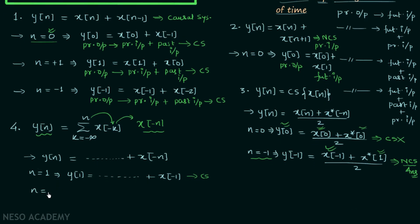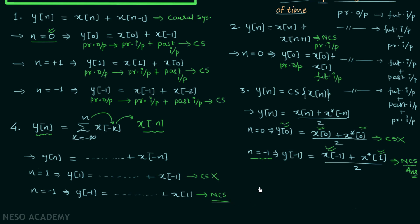However, checking n = -1 gives y[-1] as a sum of terms with final term x[+1]. The present output is now depending on a future value of input. Therefore the system y[n] = Σ(k = -∞ to n) x[-k] is a non-causal system.